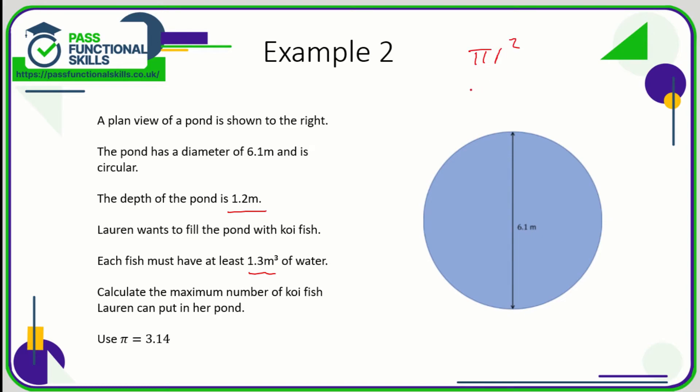The area of a circle is πr². π is 3.14. Now if the diameter is 6.1, then the radius is going to be half that, so the radius is going to be 3.05. So our calculation is 3.14 times 3.05 times 3.05.